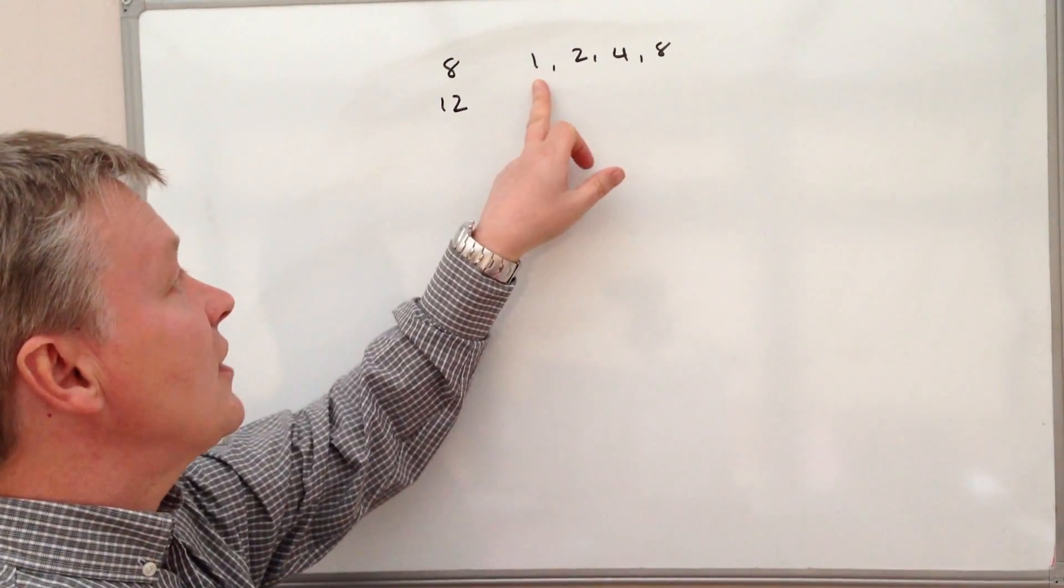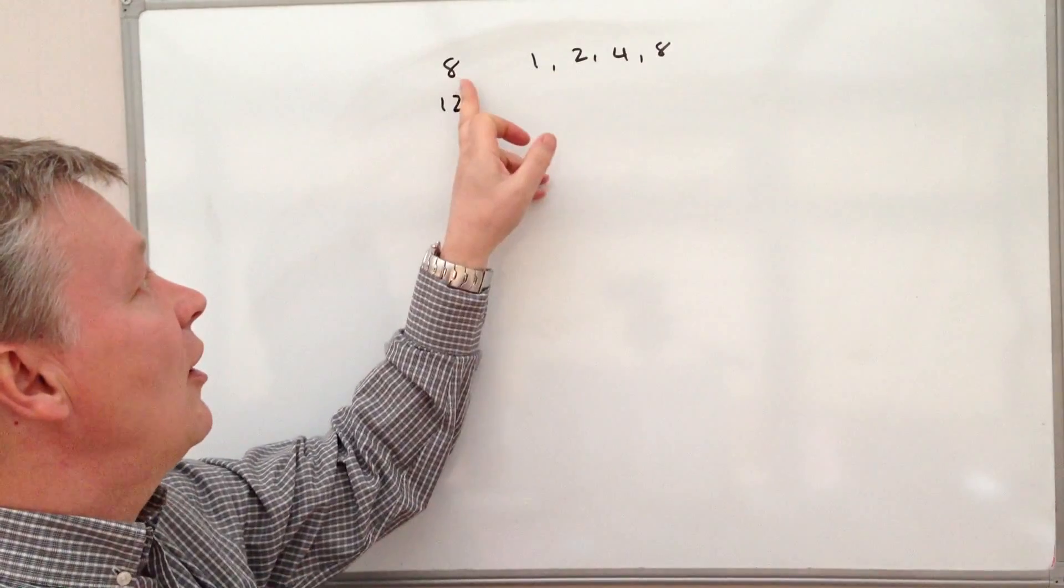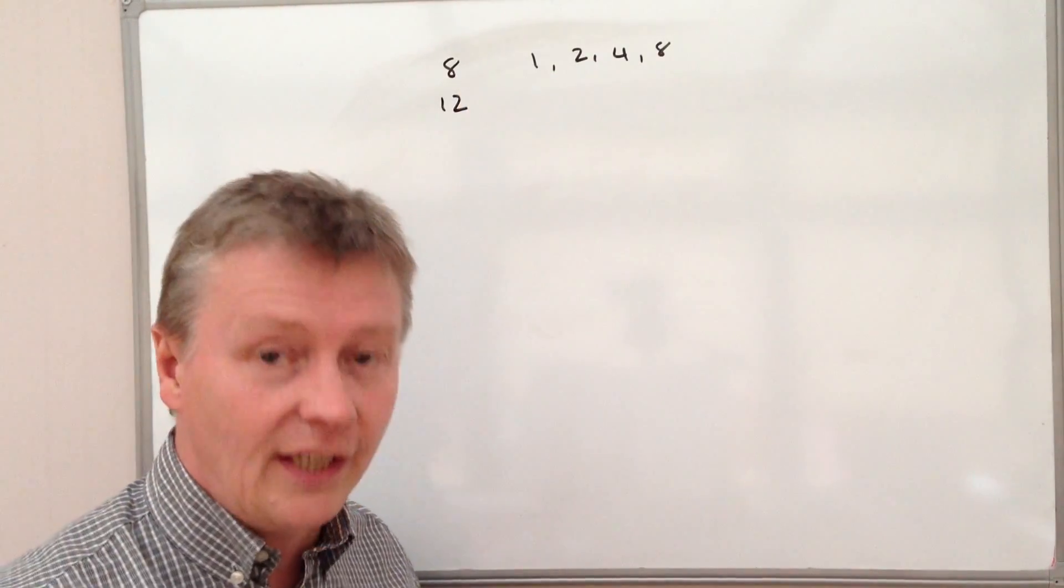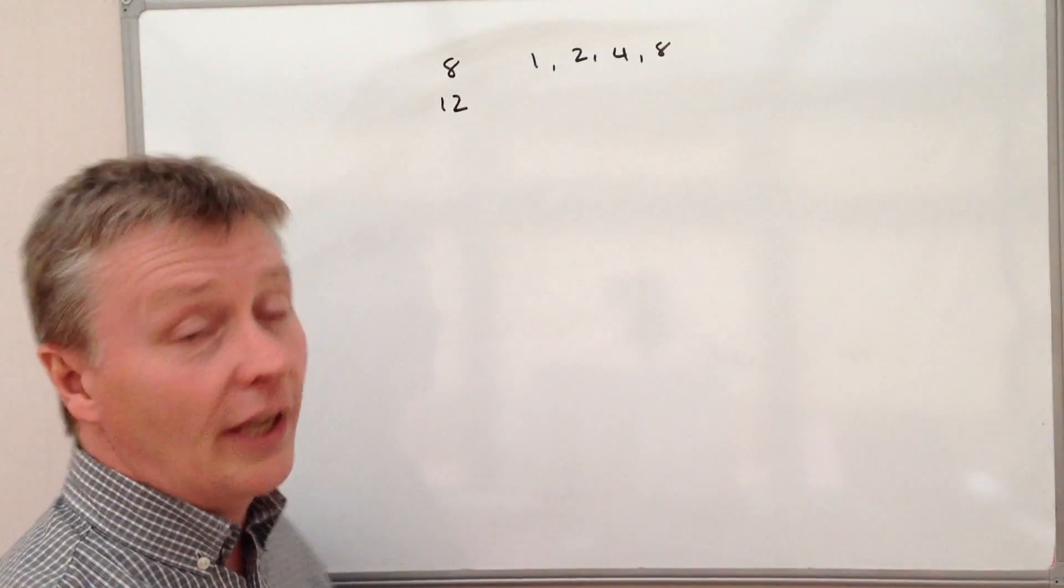So in other words, what we've got there is the factors of 8, all the numbers that will divide neatly into 8 without leaving any remainder.